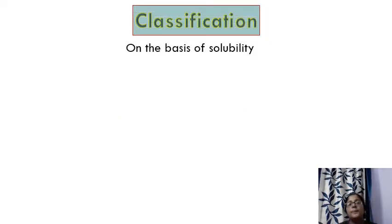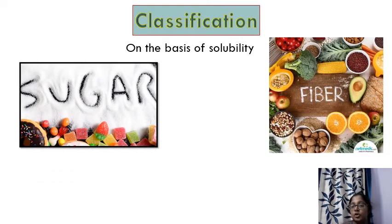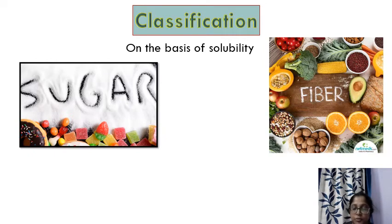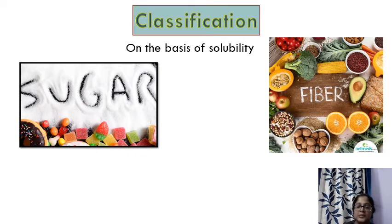On the basis of solubility, carbohydrates can be classified as sugars and non-sugars. Sugars are always soluble in water — if you take a candy and mix it with water, it dissolves. Non-sugars, such as fiber and cellulose like husk, are not soluble in water. So solubility-based classification gives us sugars and non-sugars, mainly fiber and cellulose.